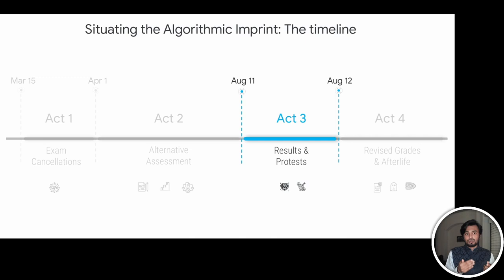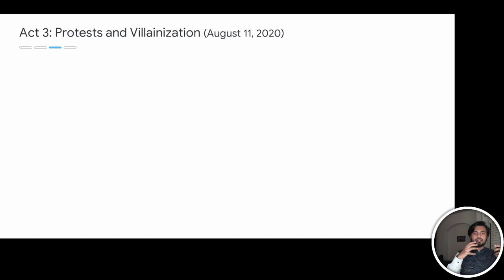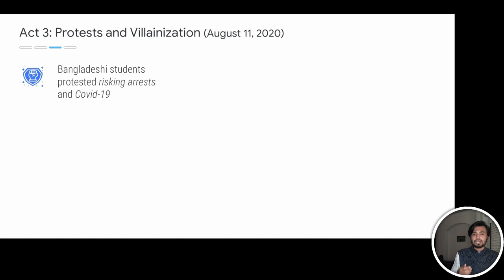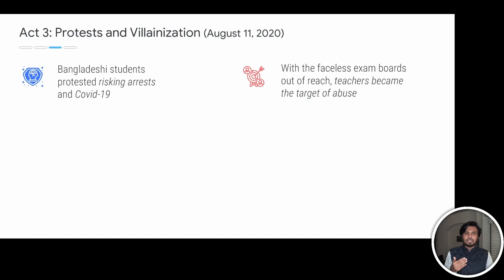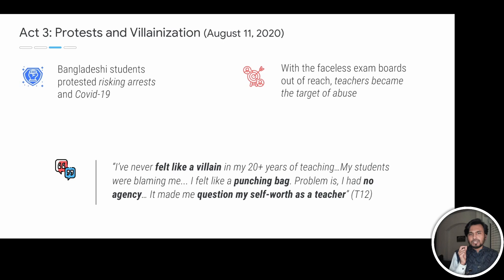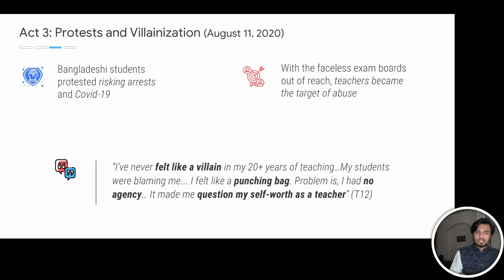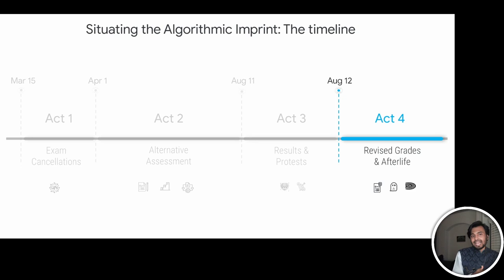With all of these in mind, we now move to Act 3. This act is about one day — the results day, when the algorithmic results were released. Risking arrests and COVID, Bangladeshi students actually took to the streets and protested. However, unable to reach the faceless exam boards, the teachers became the target of abuse, as this teacher highlights. And I quote: 'I've never felt like a villain in 20-plus years of teaching. My students were blaming me. I felt like a punching bag. Problem is, I had no agency. It made me question my self-worth as a teacher.' In this act, we get a taste of how lived experiences will shape the imprint at the psychological level in people's minds.